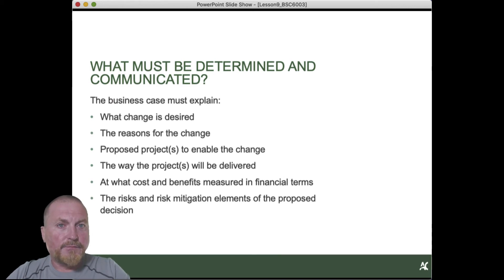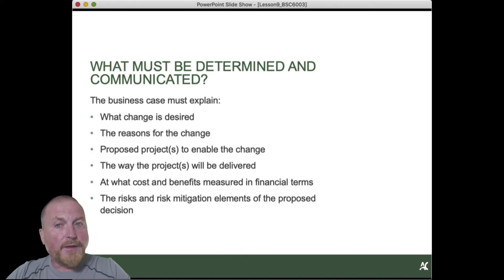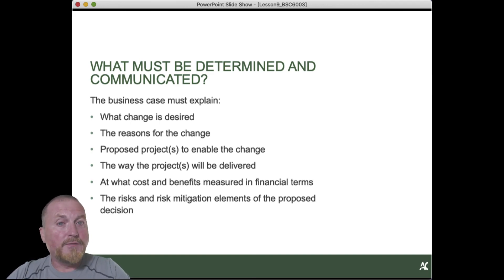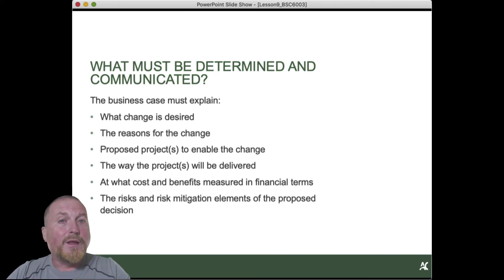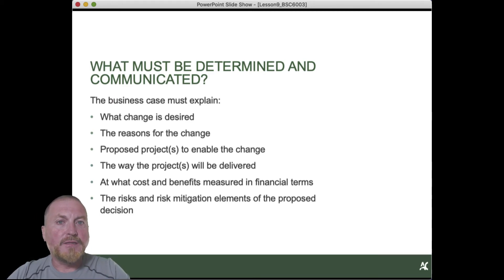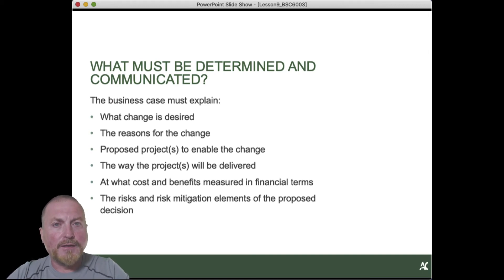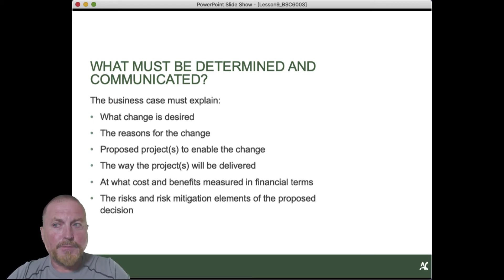At what costs and benefits measured in financial terms — we've discussed a lot about that, so be very clear in your business case. And don't forget the risks and risk mitigation elements of your proposed decision. What will happen if something goes wrong? What is our fallback position? In cases where those issues are applicable, you have to discuss them. You may cover them in summary in your business case, since you have another document laying out the implementation plan, but it needs to be covered off.